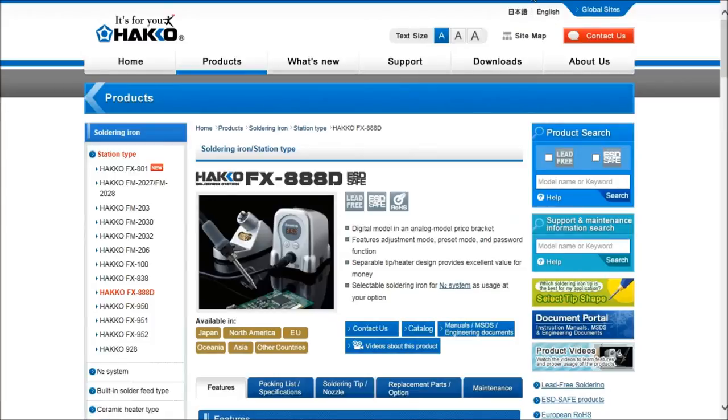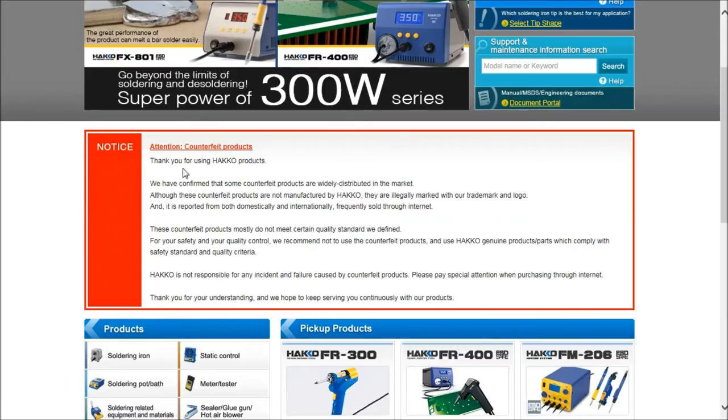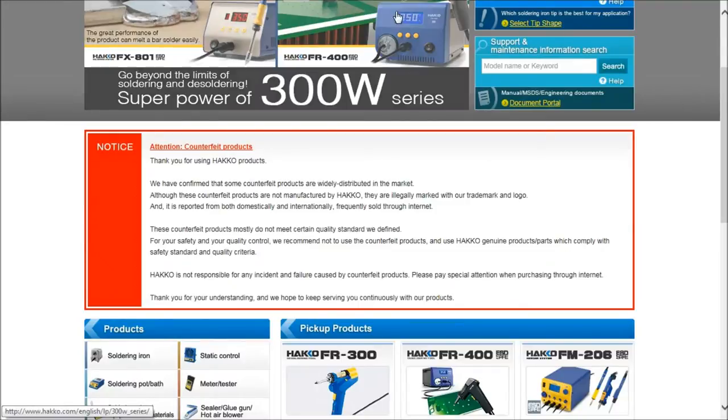Anyway, so back to the Hakko homepage. There's this big notice here, attention counterfeit product. Now, they tell you that there's counterfeit products, but there's no way for me to really have a look and see whether the product that I've bought is a genuine Hakko. The box, the packaging, everything looks similar. So, cool guys, thanks for telling me that there's counterfeit products out there, but how would I know if I was an end consumer, how would I know that this is a counterfeit product? Anyway, a bit of a rant over.